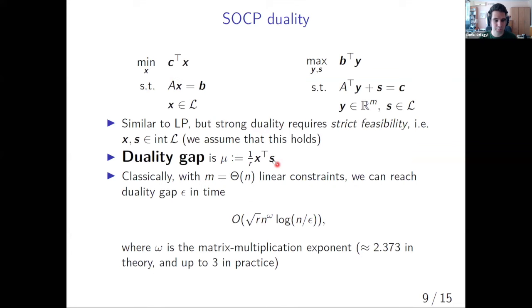The duality theory of the SOCP is pretty similar to the one for LPs. There isn't too much to say. The main takeaway is that indeed we can solve this with a classical algorithm that runs in time square root of N times N to the omega times the log of the precision. So the main question is how do we quantize this? Well, for this, we need some tools.